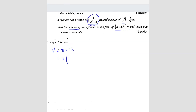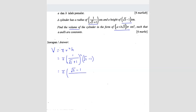So we write 1 over (√3 + 1)² times the height, which is (√3 − 1). We expand this: 1² is still 1, and we multiply to get (√3 − 1) over (√3)² which gives 3, plus 2√3 plus 1. So we simplify to get (√3 − 1) over (4 + 2√3).